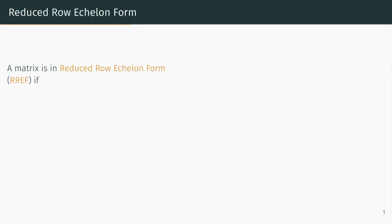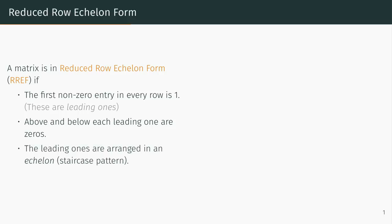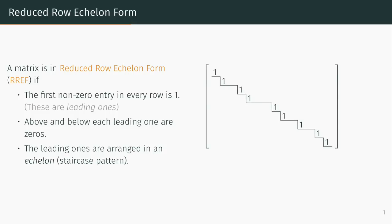A matrix is in reduced row echelon form exactly if it follows the following three properties. The first non-zero entry in every row is a 1 — these are called leading ones. Above and below each leading one are zeros. And the leading ones are arranged in a staircase or echelon pattern. The leading ones are in an echelon pattern if every leading one is to the right of the leading one in the row above it, and all leading ones are as far up in the matrix as possible.